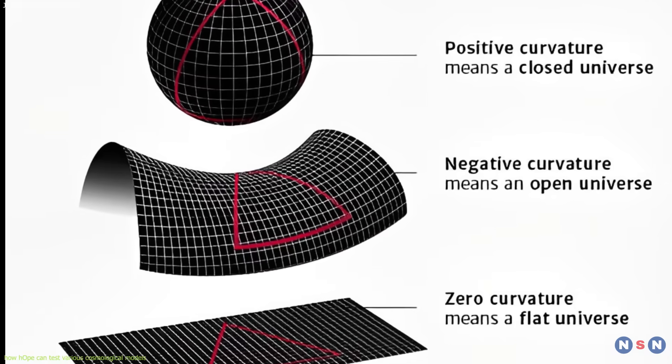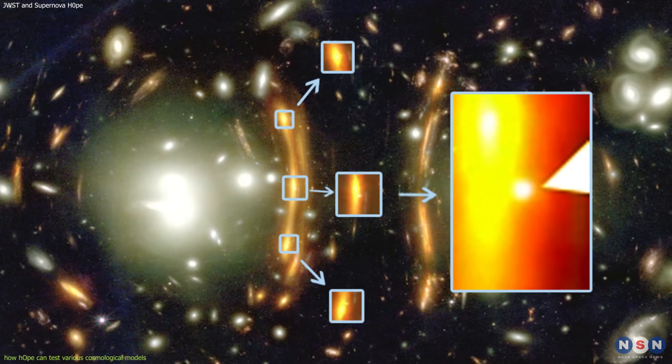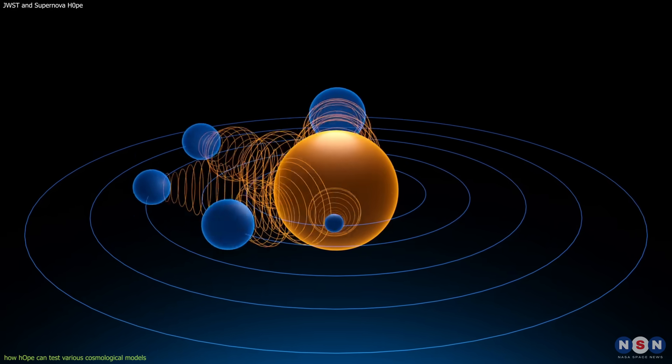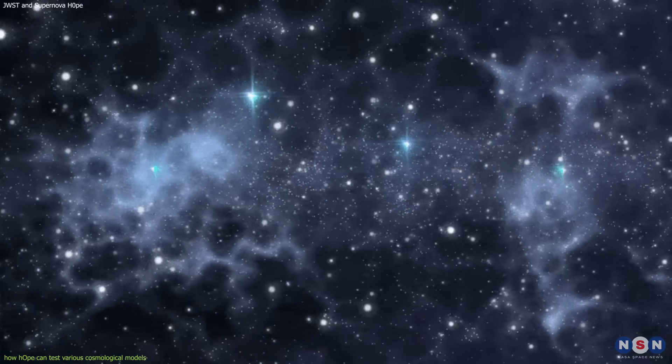By measuring the angular size and distance of supernova H0P and comparing it with other lensed sources, we can constrain the value of the curvature and test these models. And there are more parameters and models that supernova H0P can help us test, such as modified gravity theories, early dark energy models, interacting dark matter models, and more.